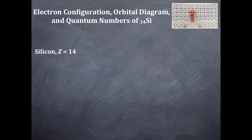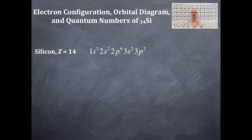From there, you're going to write out the electron configuration for silicon. You're always going to start off with 1s1, then 1s2, etc. Here is the electron configuration for silicon: 1s2, 2s2, 2p6, 3s2, 3p2.